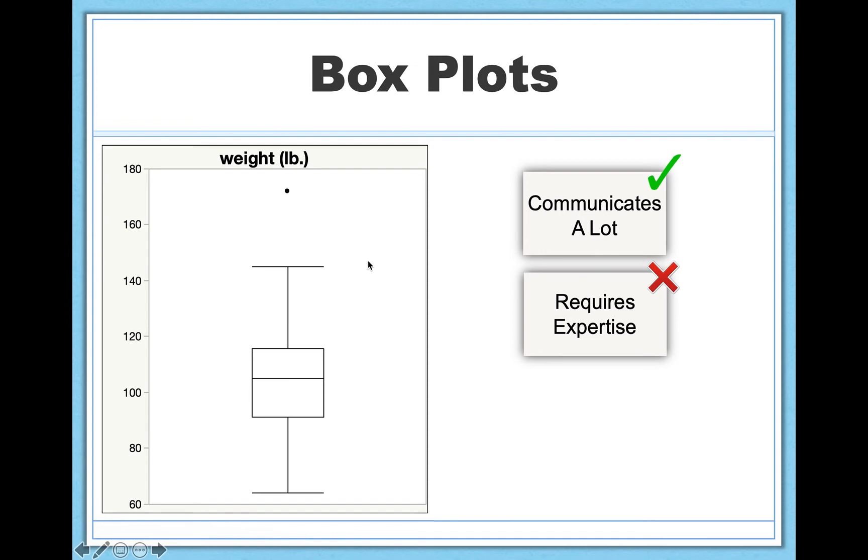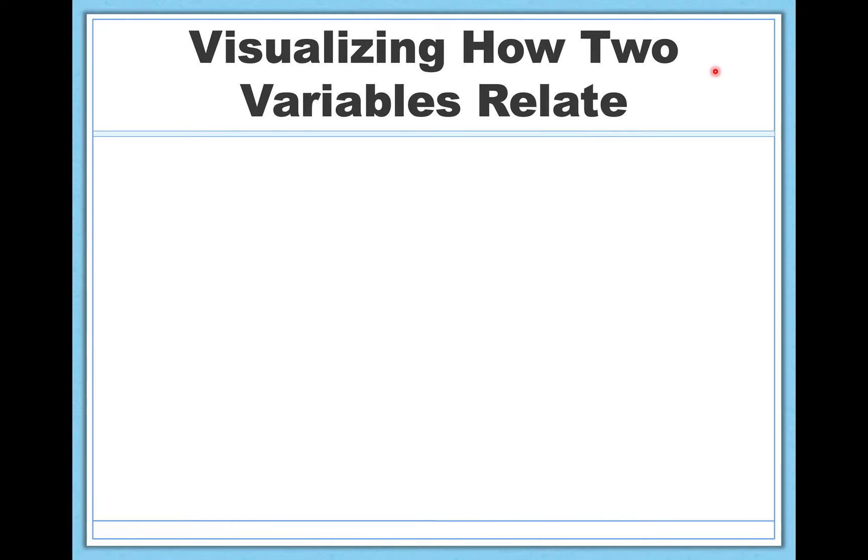But again, this requires expertise. If you had never learned about box plots before, you would probably have little to no idea about what you're really looking at if I were to present this to you. And again, this is appropriate for interval ratio scale data, not nominal and not ordinal. So far, though, we've only looked at how we can graph one variable in isolation. But oftentimes when we're doing research or we're trying to understand some data, we really want to look at how two variables relate to one another. So let's look at some examples of how we can do that.